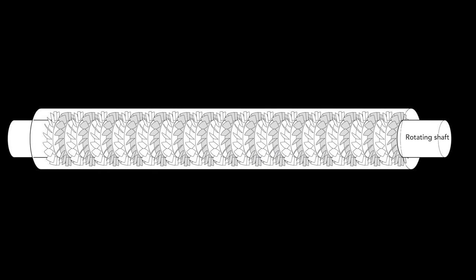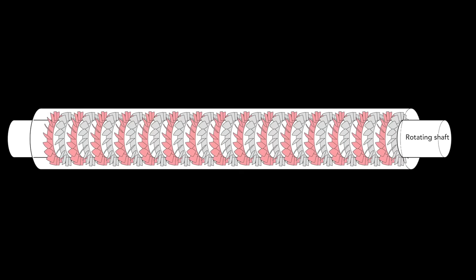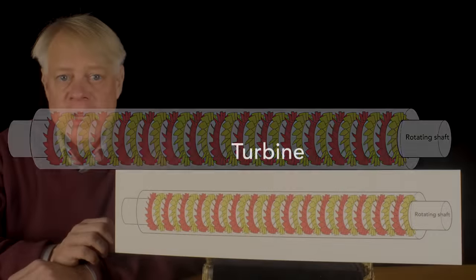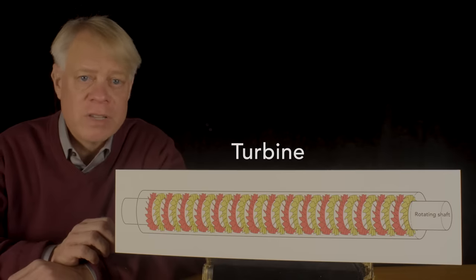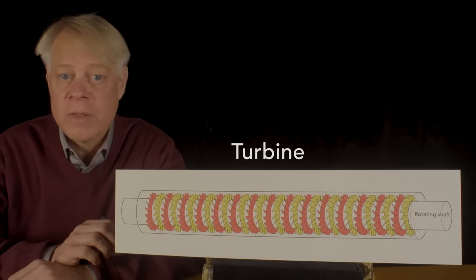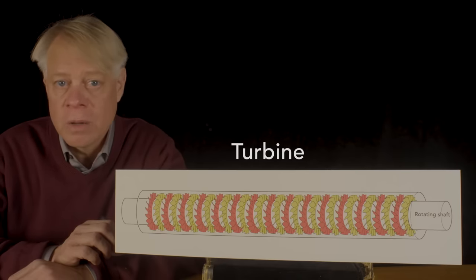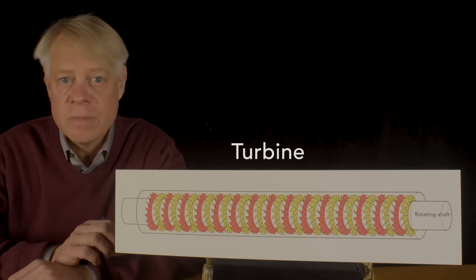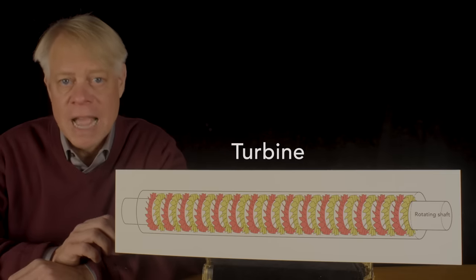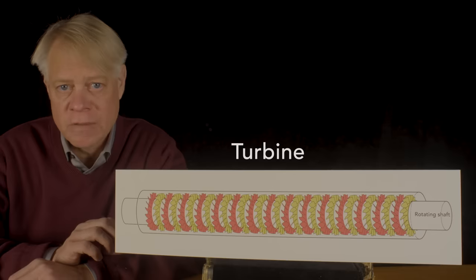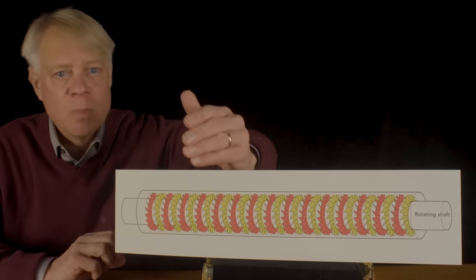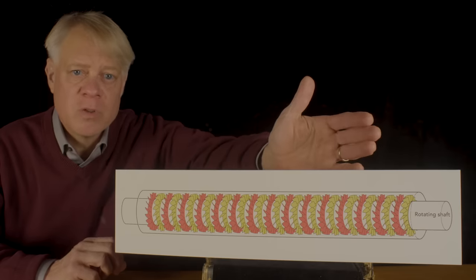Parsons' engine had 30 wheels — half of which were moving, half stationary. He called this device a turbine. The reason he used 30 wheels was to avoid the device-destroying speed created by the jets of the eolipyle, or the cutting action of fast-moving steam as in Branca's device. Parsons' turbine controls the release of the steam's energy, and thus the rotational speed of the shaft, because steam expands in small steps a little bit across each wheel.